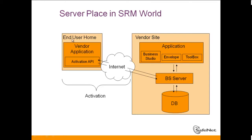Another important aspect of Business Studio is that it works with activation. The end user machine's vendor application includes an activation API, and this activation API uses an internet connection to the Business Studio server — or the activation server, if the two are installed on different machines. This activation API calls the Business Studio server to provide it with a product key and C2V of the end user machine, and then the server returns a V2C.